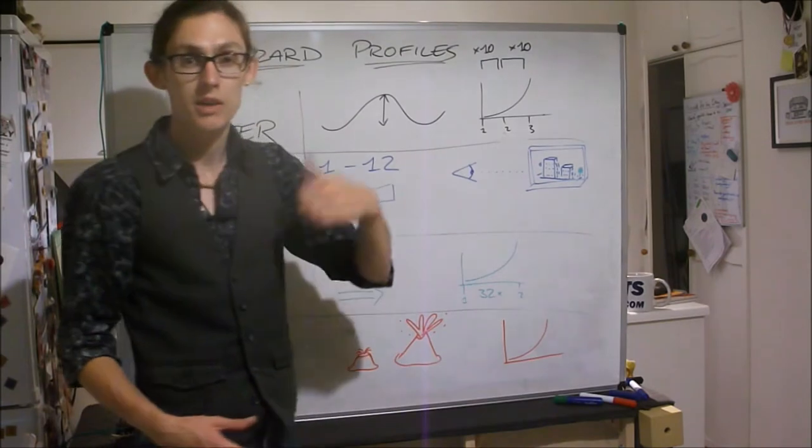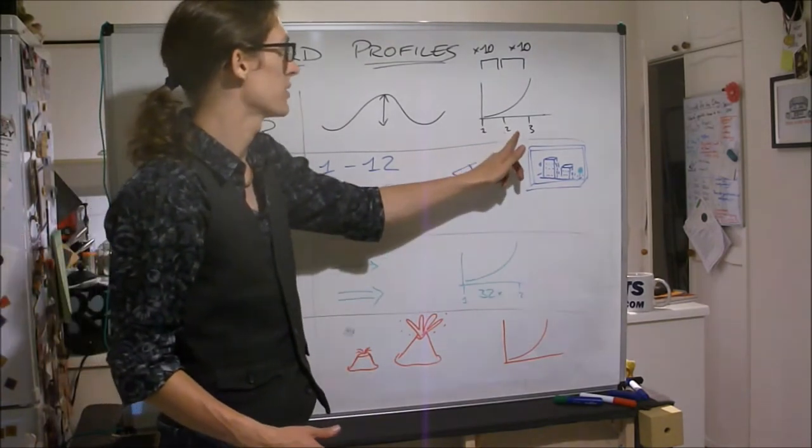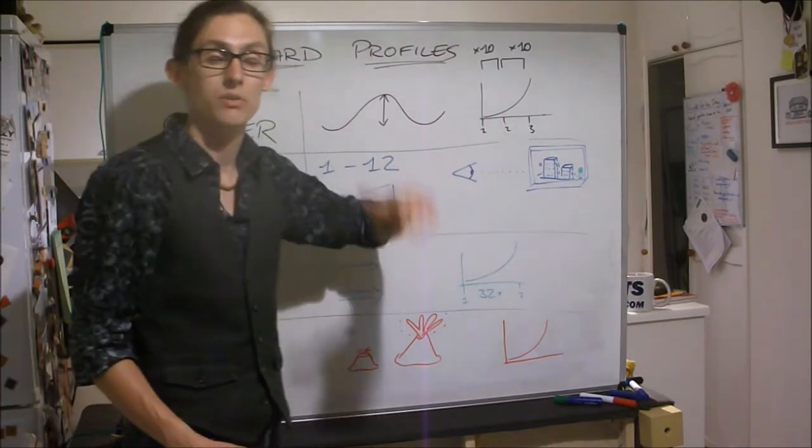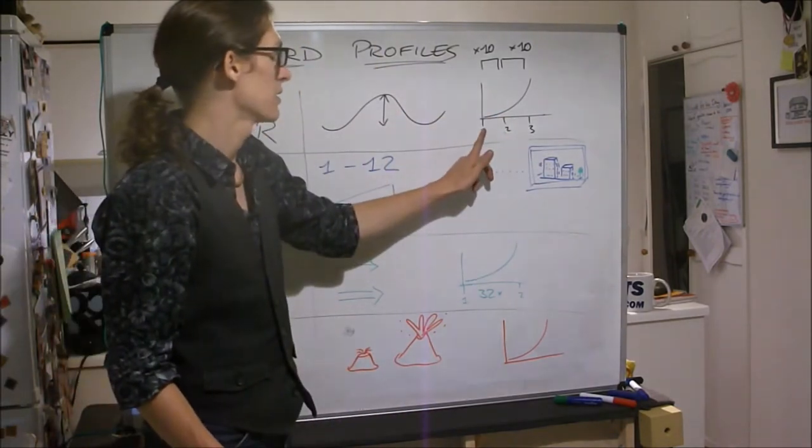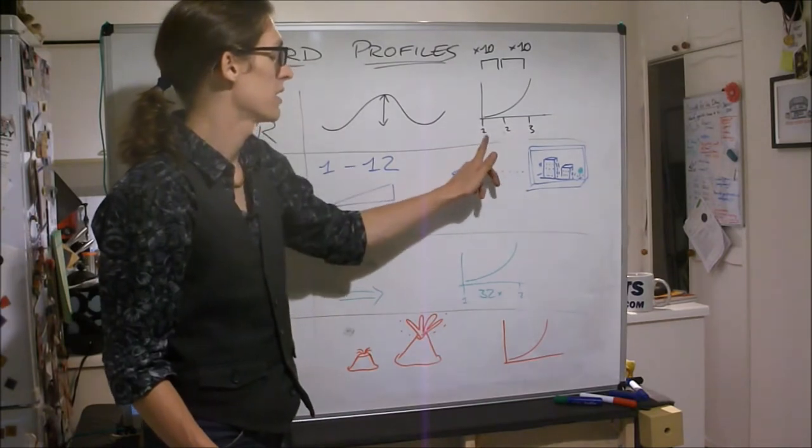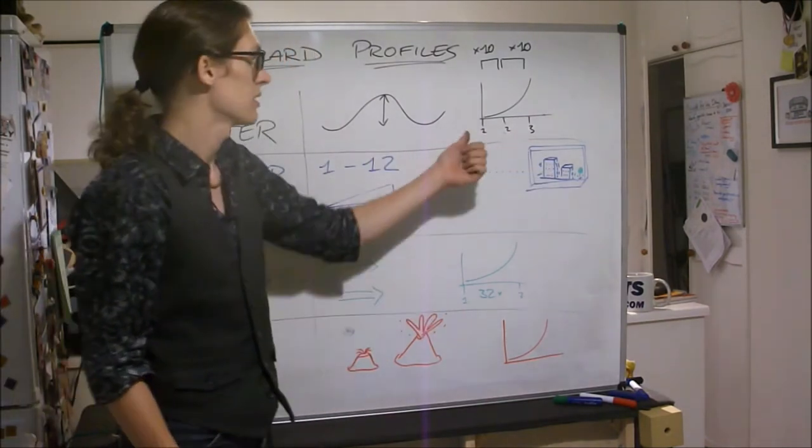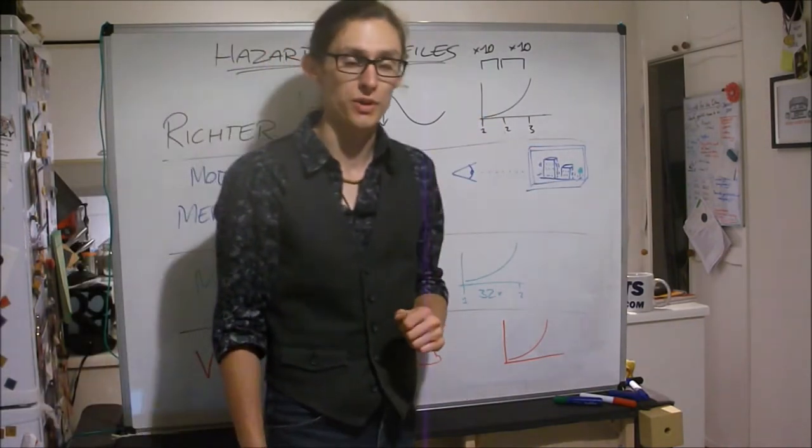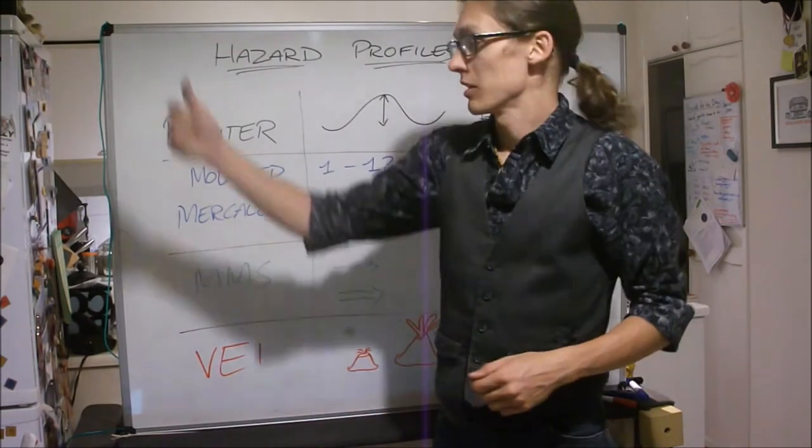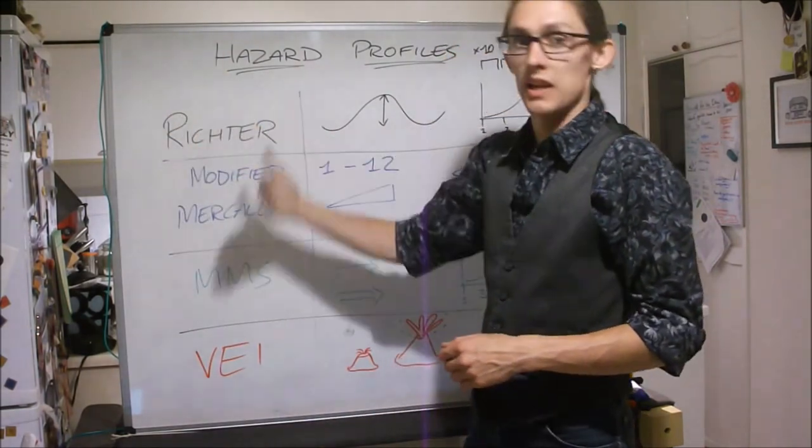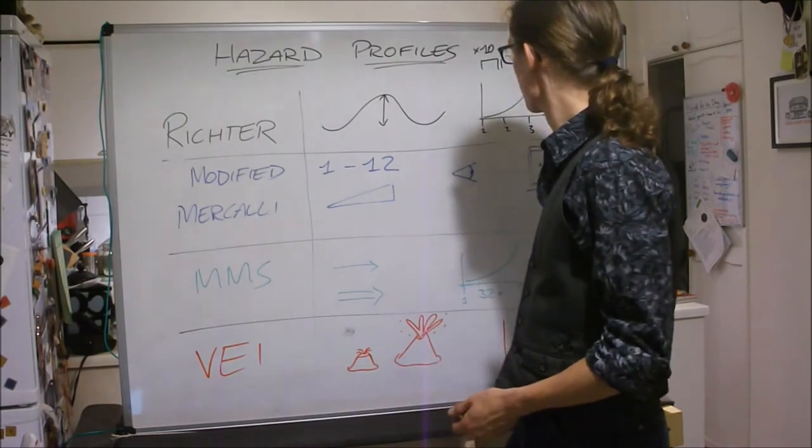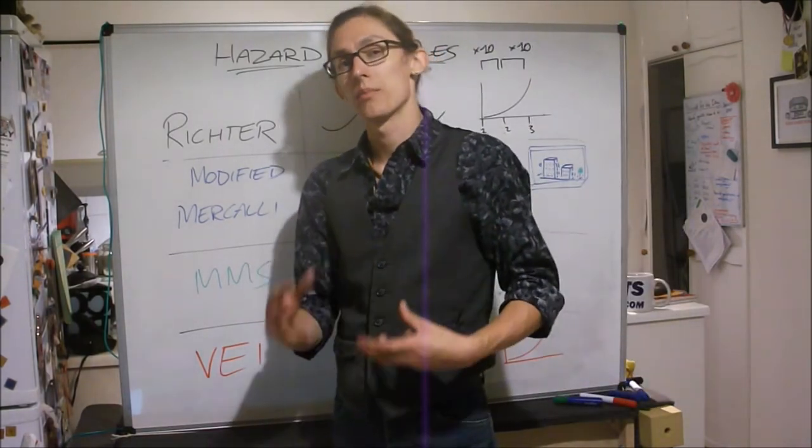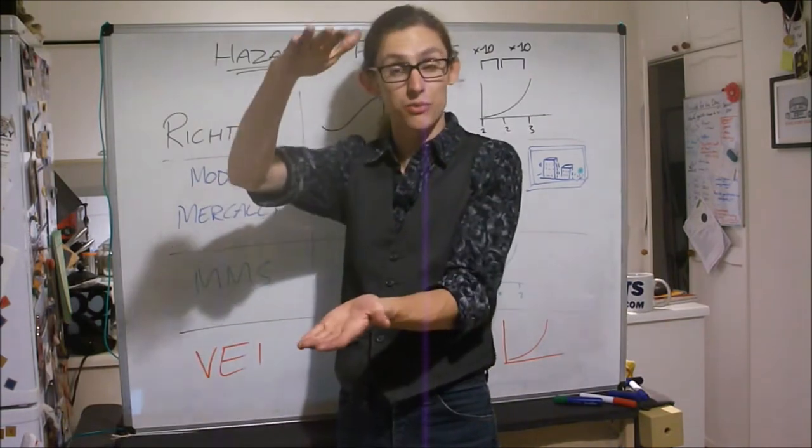And the Richter scale works on the basis that as you go up, the waves get ten times higher. So between one and two the waves get ten times higher, between two and three the waves get ten times higher again. So that's ten times higher. One to three is ten times ten higher, so it's a hundred times higher. It's a logarithmic scale. So basically you're going ten, hundred, thousand, ten thousand, so on.